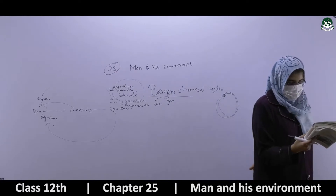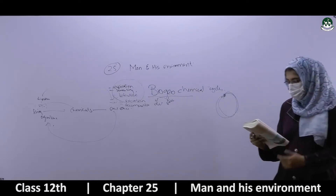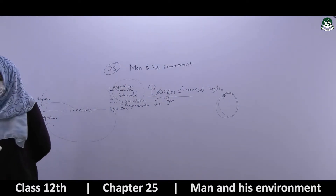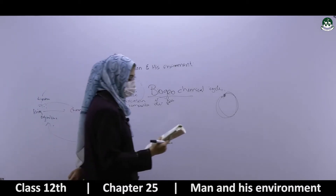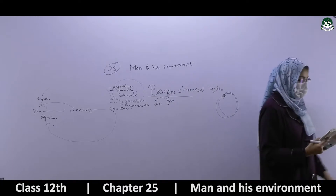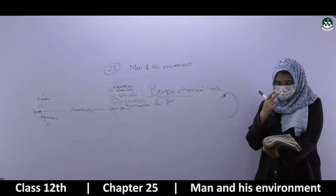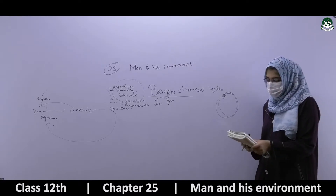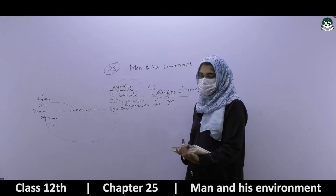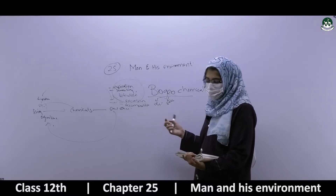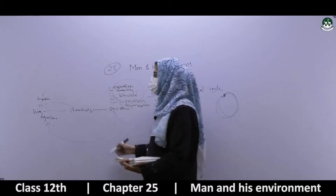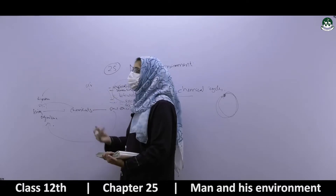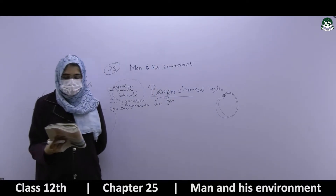As an element moves through this cycle, it often forms compounds with other elements as a result of metabolic processes in living tissues, and by natural reactions in the atmosphere, hydrosphere (water), and lithosphere (the layer of earth). Elements move from living organisms back to the environment and can become part of air, water, or earth.